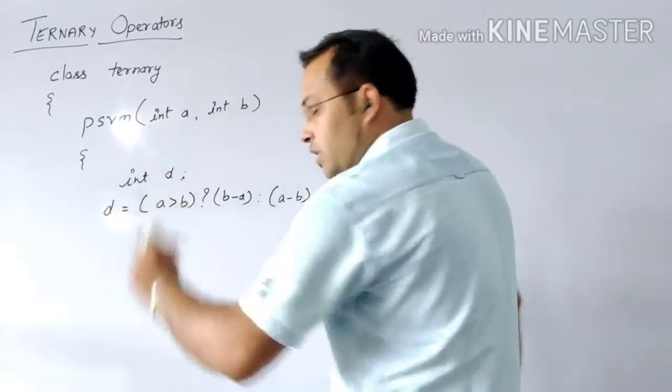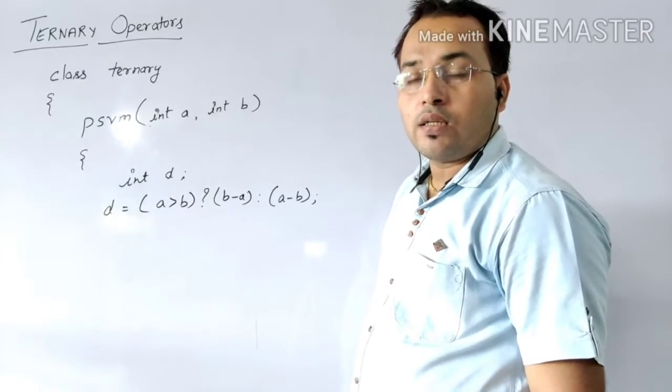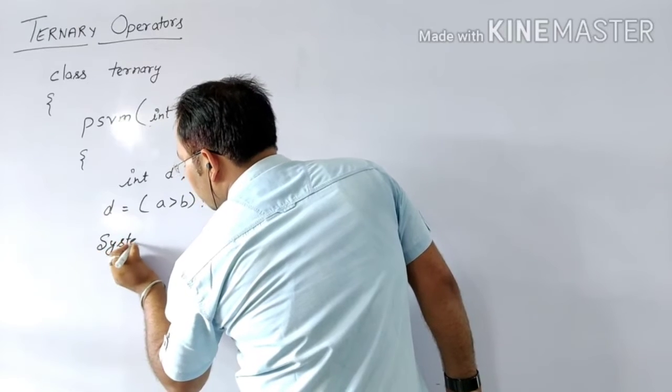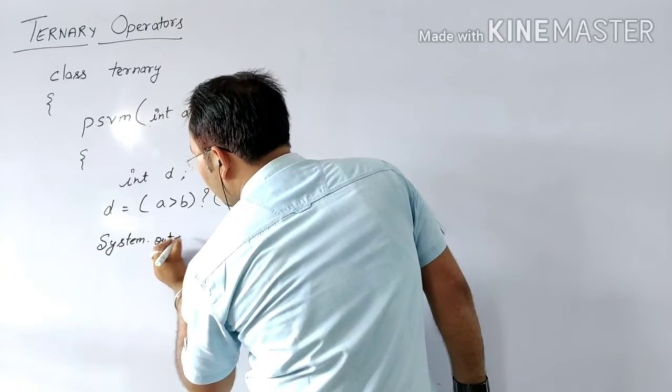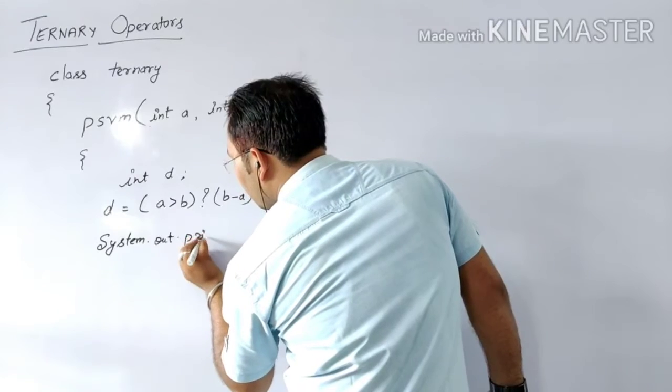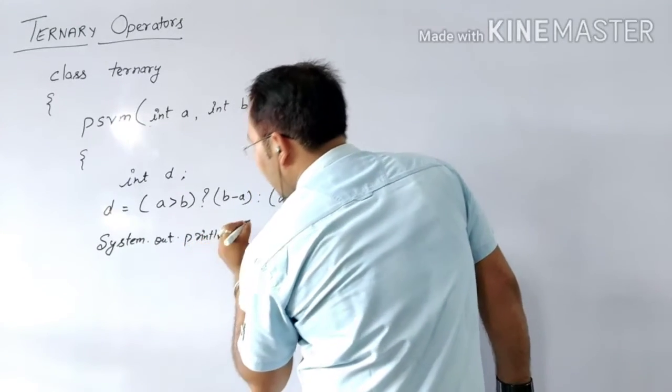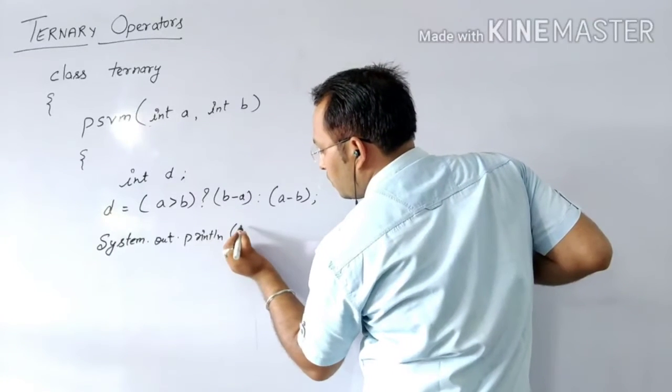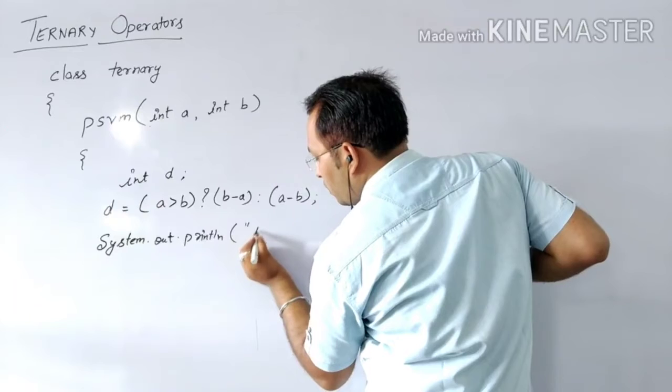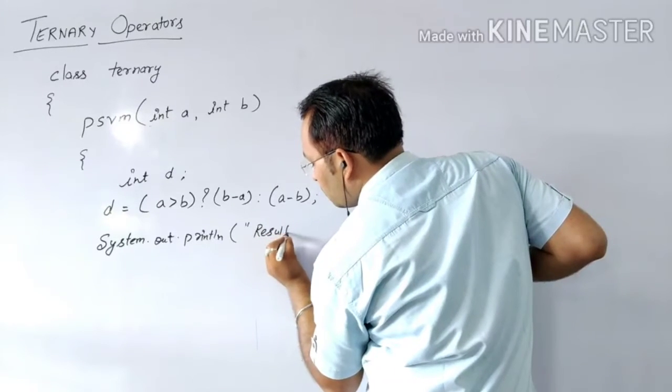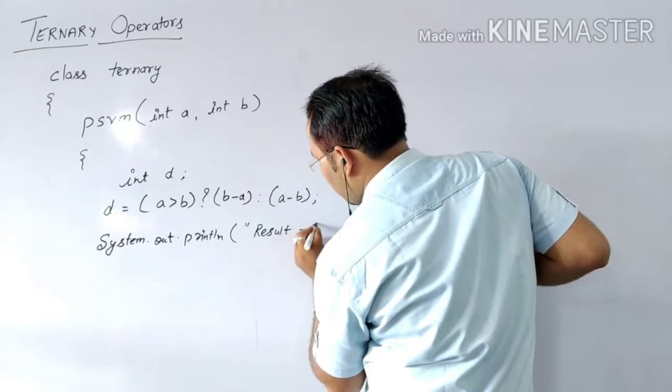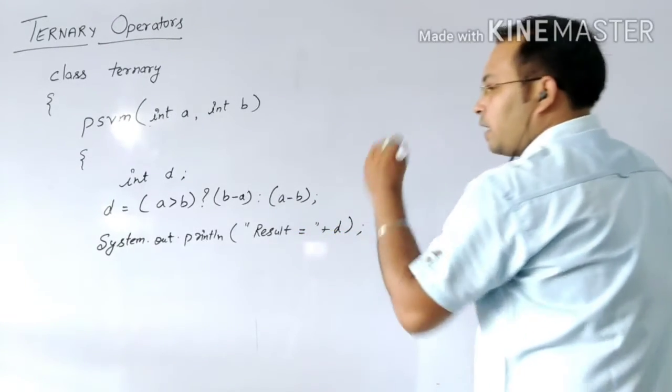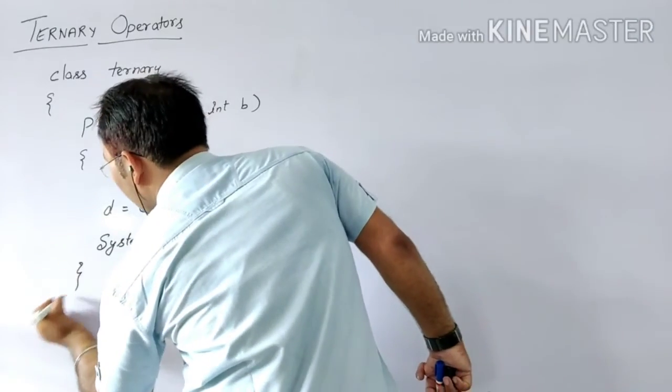Now we have to print this one. Then what is the method? Same method. System dot out dot println, and in that we have to write what? First of all, write my statement, result is equals to, plus d. And just close. The same here, whatever the way I have used over here, you will use it, you will get the desired result whatever you want.